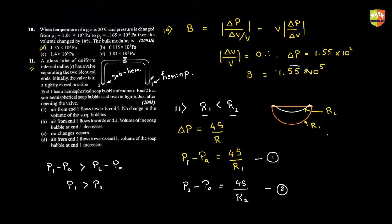So pressure at bubble 1 is more than pressure at bubble 2. That is the reason why air will flow from 1 to 2, from higher pressure to lower pressure. When it does that, the pressure of one reduces and pressure of two increases. Air flows from one to two, and the volume of the soap bubble at end one decreases. So option B is correct.